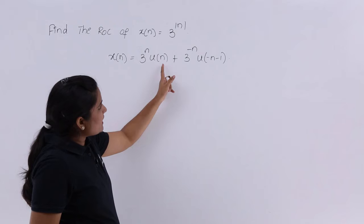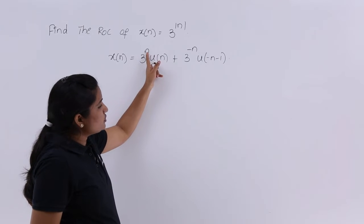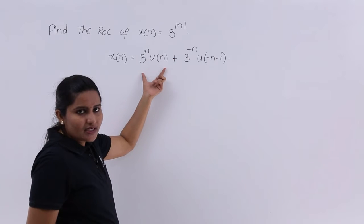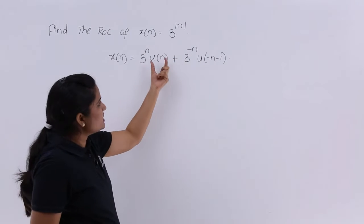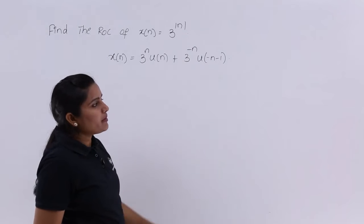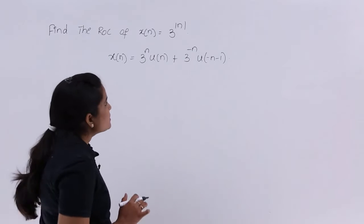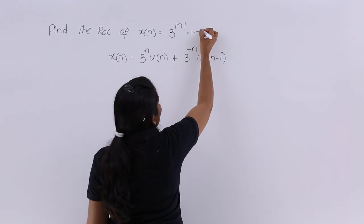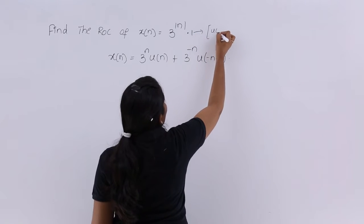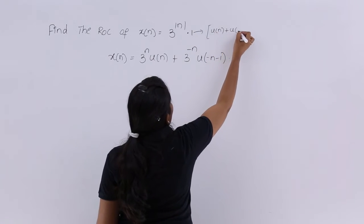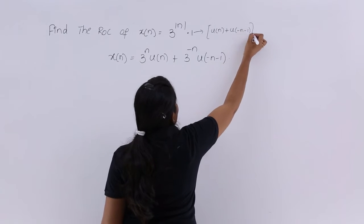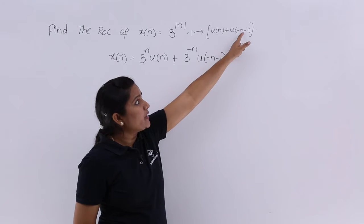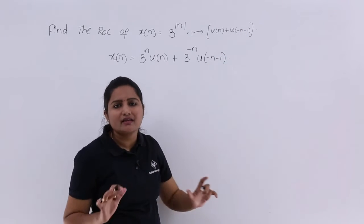If this is a right sided signal, n is equivalent to positive; in the left region that is equivalent to negative. We can represent left and right regions as u(n) + u(-n-1). Here what I am doing is multiplying by 1, and I am writing this 1 as u(n) + u(-n-1). Multiplying u(n) + u(-n-1) won't affect the signal because this is a discrete DC 1.